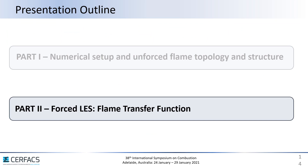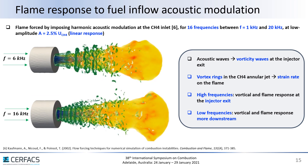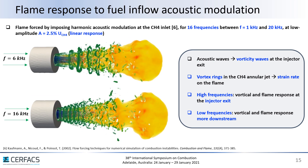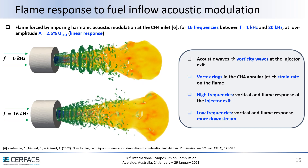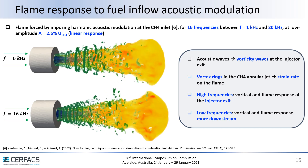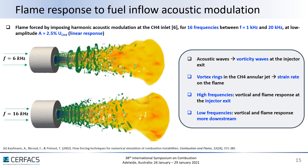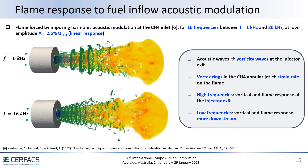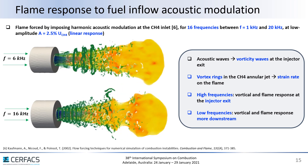That brings us to the second part, describing the results of the forced LES and in particular the computation of the Flame Transfer Function. This work had three requirements. First, we wanted to study the flame response to acoustic perturbation in the fuel flow, so we imposed harmonic acoustic modulation at the methane injector. Second, we wanted to study the flame response over a large range of frequencies, so we performed 16 distinct forced LES with forcing frequencies ranging from 1 kHz to 20 kHz. Third, we wanted to study the linear flame response, so we imposed a very low modulation amplitude of 2.5% of the bulk flow velocity of the methane injection, and performed several LES to confirm that we are in the linear regime.